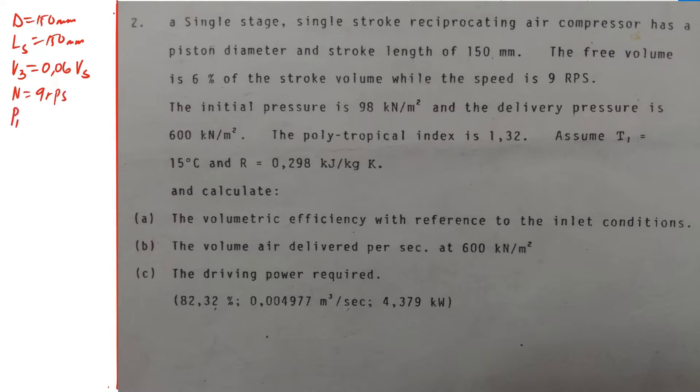The initial pressure is 98 kN per square meter and the delivery pressure is 600 kN per square meter. Polytropical index is 1.32. Assume T1 equals 15 degrees Celsius and gas constant R equals 0.298 kJ per kg Kelvin. We are asked to calculate the following.